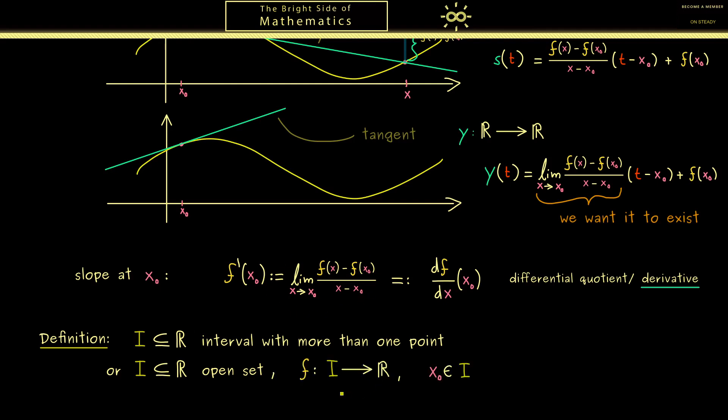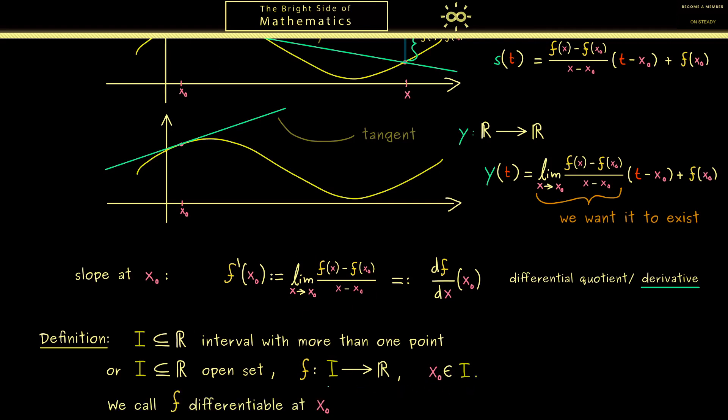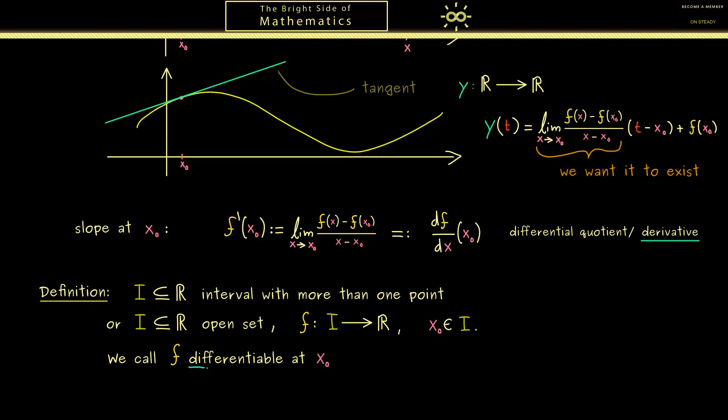Then let's fix any function f with domain I and a point x0 from this domain. And now we call this function differentiable at the point x0 if this limit here exists. However you often see that this whole explanation with the linear approximation is put into the definition.